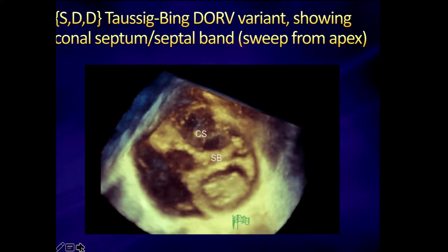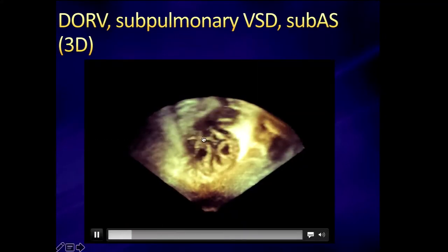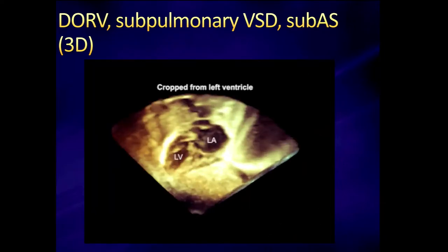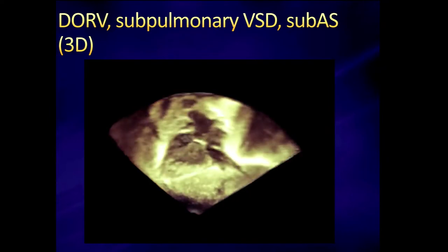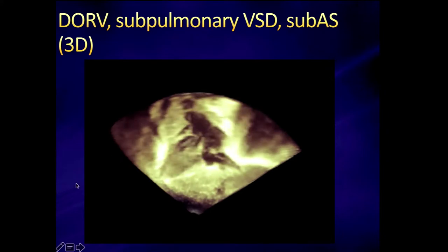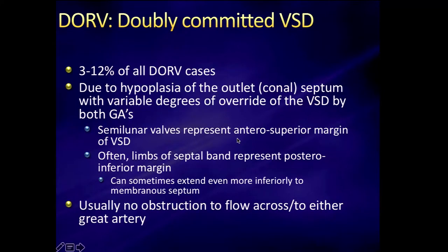This 3D shows how the pulmonary valve overrides, and the conal septum looks like a door just hinged at one side. Since the VSD is aligned with the pulmonary artery, this patient is going to need an arterial switch operation because of significant subaortic stenosis, and may need an aortic arch repair. That's a much different and probably more complicated operation than the previous one, and many of these patients also have coronary artery anomalies.